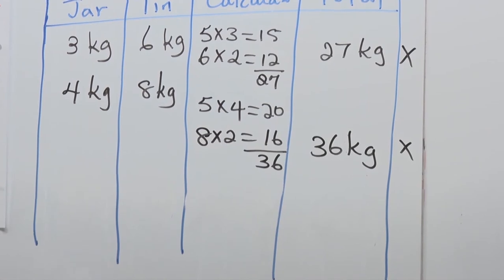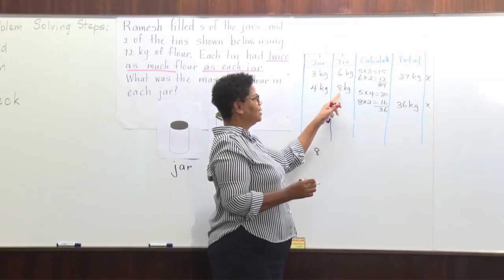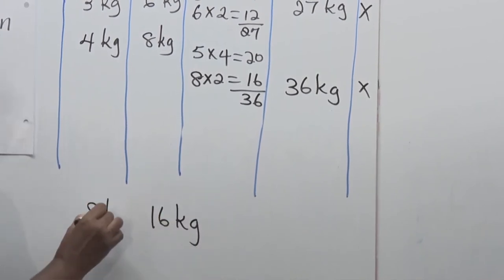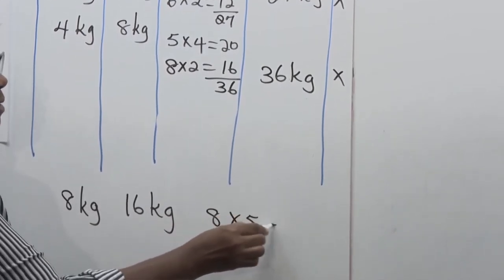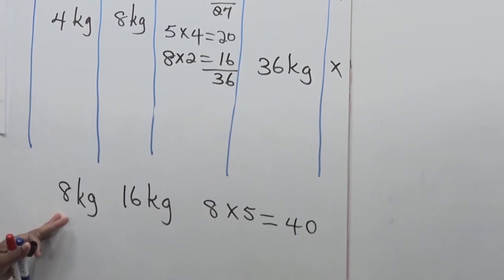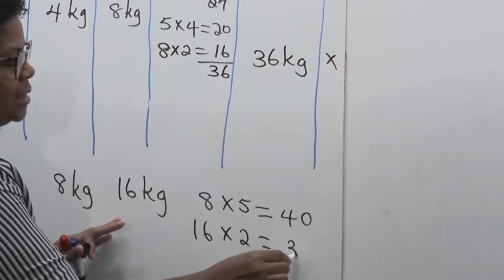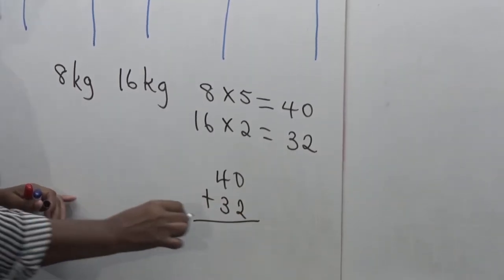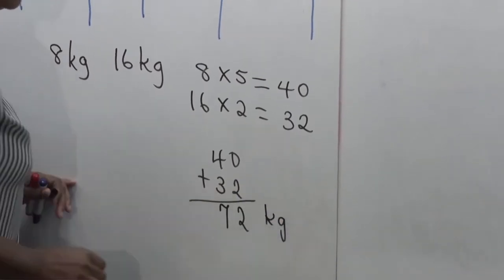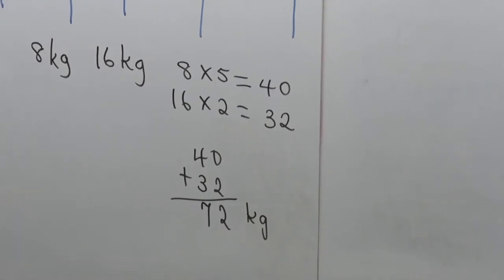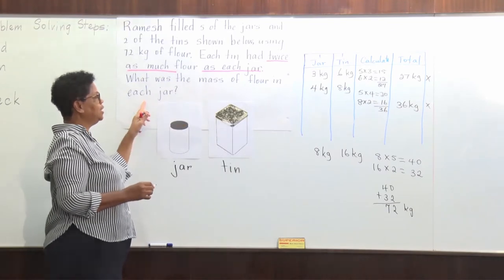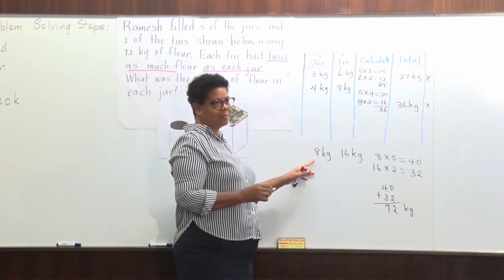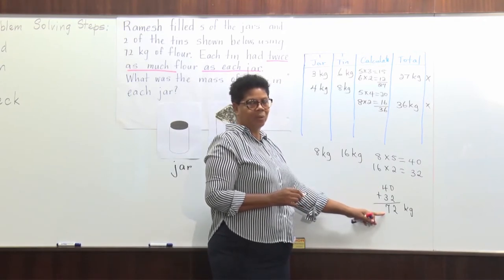Let's try that. So one jar can have 8 kilograms. One tin is going to be double the 8, which is going to be 16 kilograms. 8 multiplied by 5 will be 40, and 16 multiplied by 2 will be 32. If we add 40 and 32, our answer is 72 kilograms.